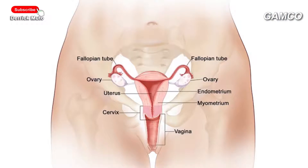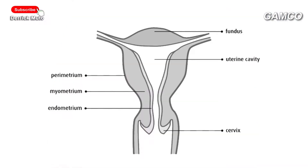Number two: the womb or uterus. It is a hollow muscular organ, pear-shaped. It is about five centimeters wide and about eight centimeters in length. It is held in position by ligaments joined to the pelvic girdle. It has walls of unstriated muscle and is lined internally by a mucous membrane called the endometrium.